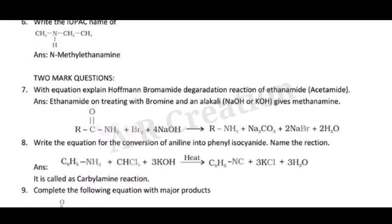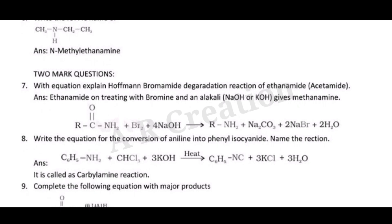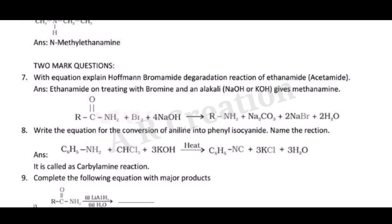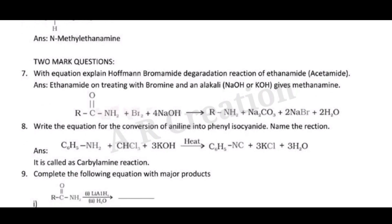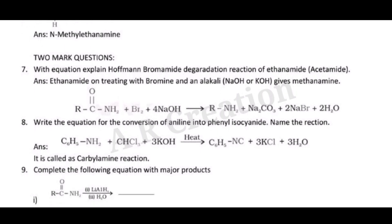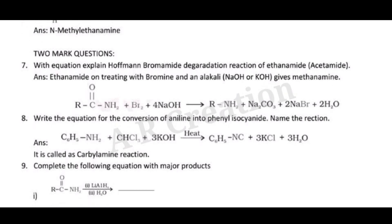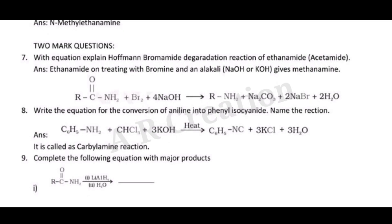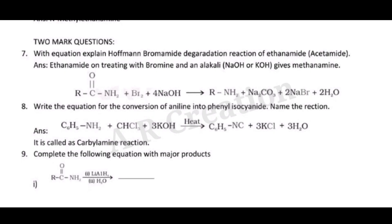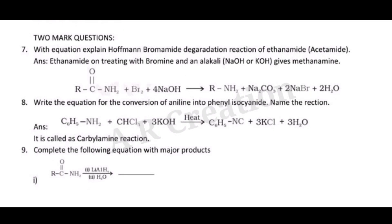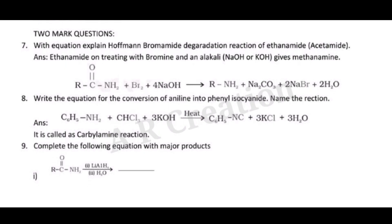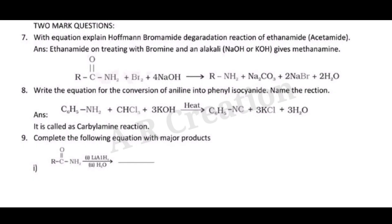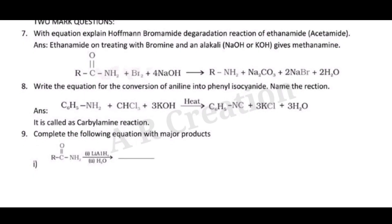Question 8: Write the equation for the conversion of aniline into phenyl isocyanide. Name the reaction. Answer: C₆H₅NH₂ + CHCl₃ + 3KOH → C₆H₅NC + 3KCl + 3H₂O. It is called the carbylamine reaction.